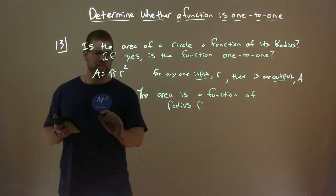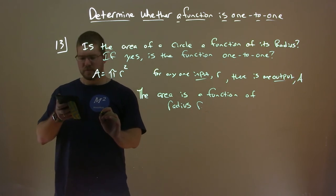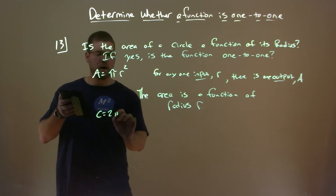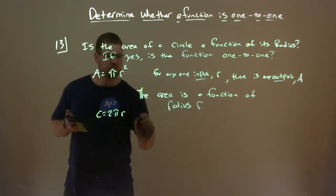What about, just curious, what about circumference? A circumference of a circle equals 2 pi r. Is it the same thing?